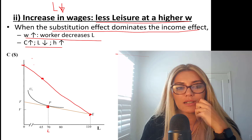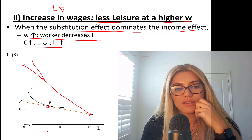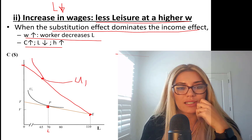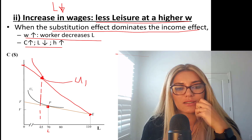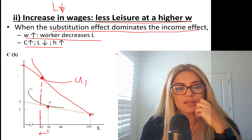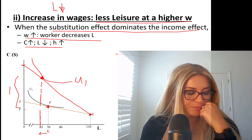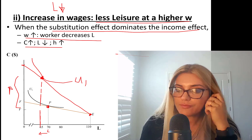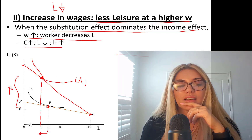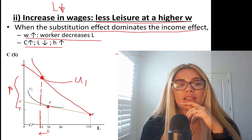I picked this new point. With the substitution effect dominating, leisure has gone down. Check out consumption — consumption has gone up. The number of hours worked went up. So, how can I decompose the income and substitution effects?